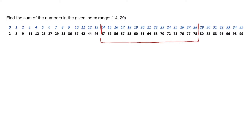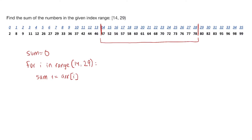The first thing you might try is a brute force solution. You would say sum equals zero, and then you have a for loop: for i in range 14 to 29, you just add whatever element is there — sum plus equals r bracket i. It's very quick to implement, but the issue is that if you have 1 billion elements to process and tens of thousands of queries — tens of thousands of times running a summation of a certain range — that's going to take a lot of time. So this is not the best way of solving this.